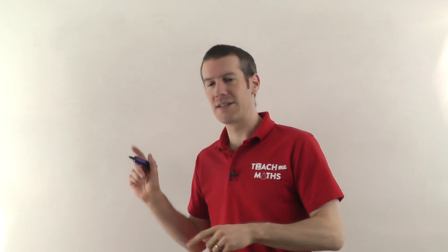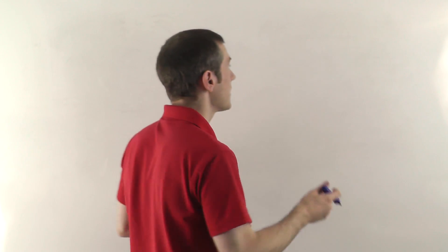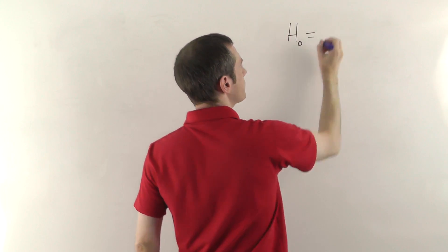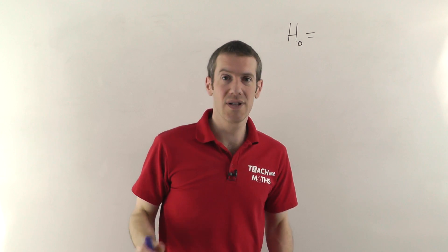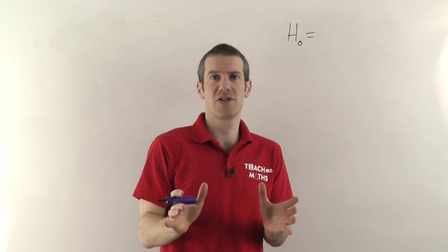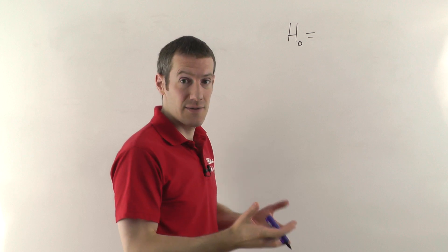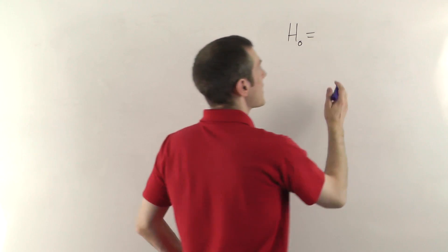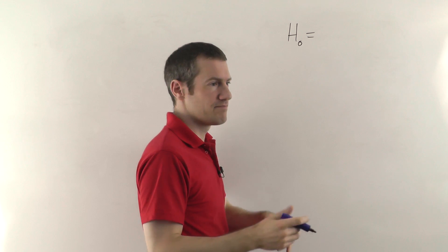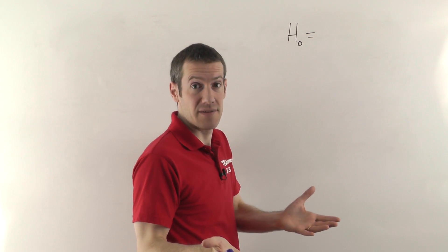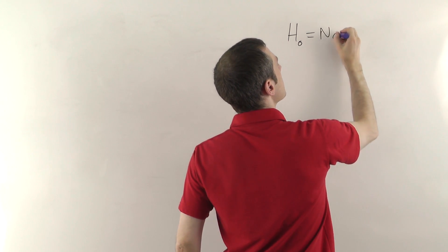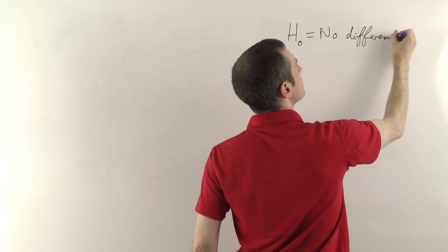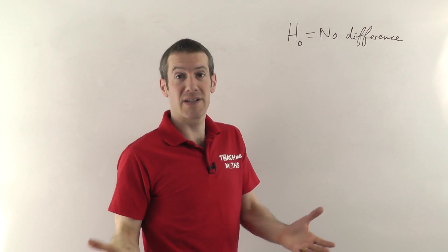Before we look at the data we need some hypotheses. We need the null hypothesis H-naught, and the null hypothesis always says there's no difference or no change from what you'd expect. So in this case, talking about the heights of the basketball players on your team, we're going to say that their height is the same as the mean — there's no difference between the heights of your basketball players and the heights of all the other basketball players.